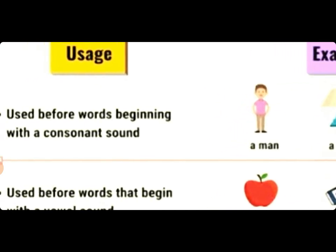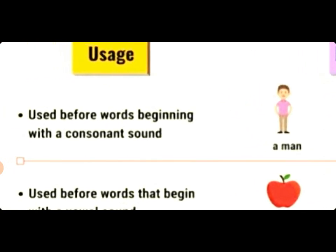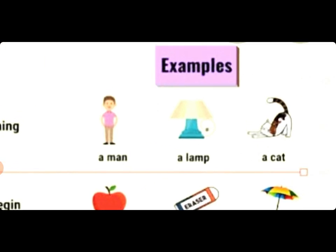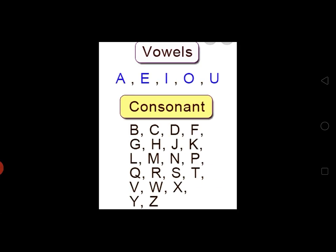We use 'a' before words beginning with a consonant sound. When a word starts with a consonant letter, we use 'a'. What is a consonant? Consonant letters are those letters that cannot be pronounced without the help of other letters. The consonant letters are: B, C, D, F, G, H, J, K, L, M, N, P, Q, R, S, T, V, W, X, Y, and Z.